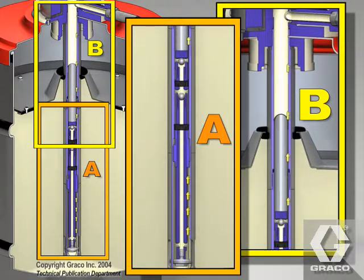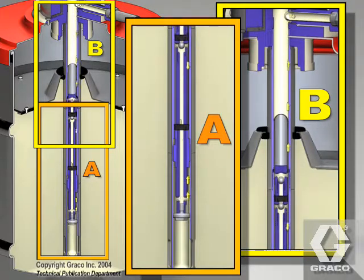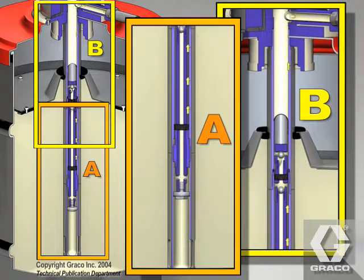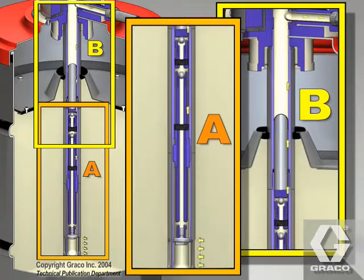At the same time, material is loaded into the lower pump cylinder as the priming piston travels past the slot at the bottom of the pump.